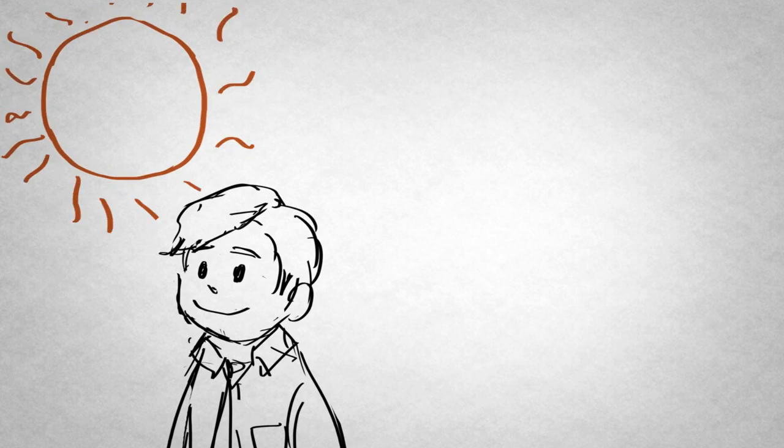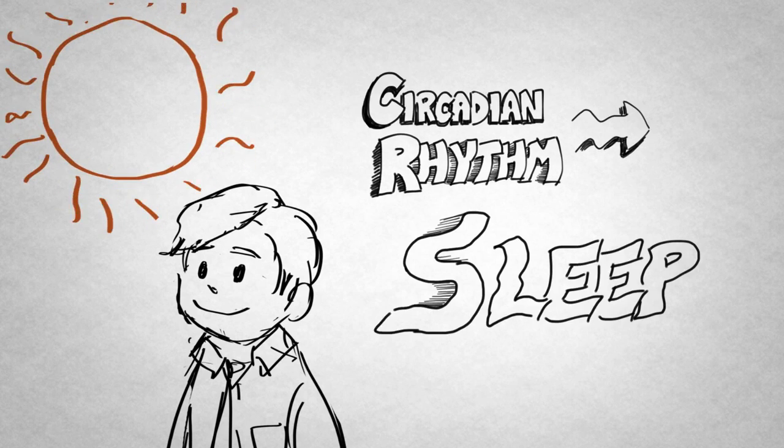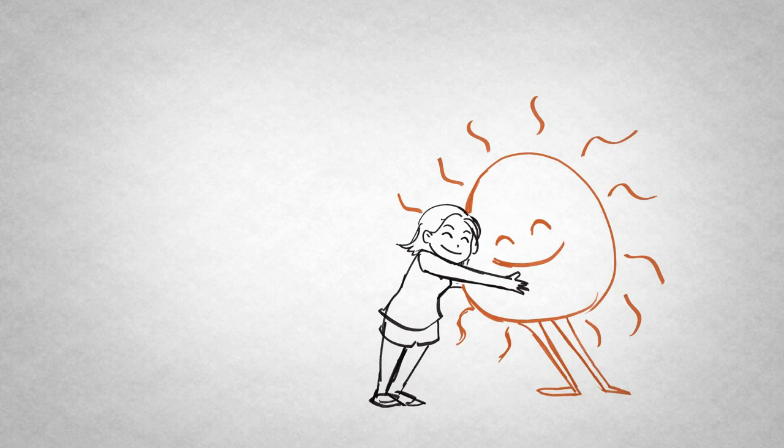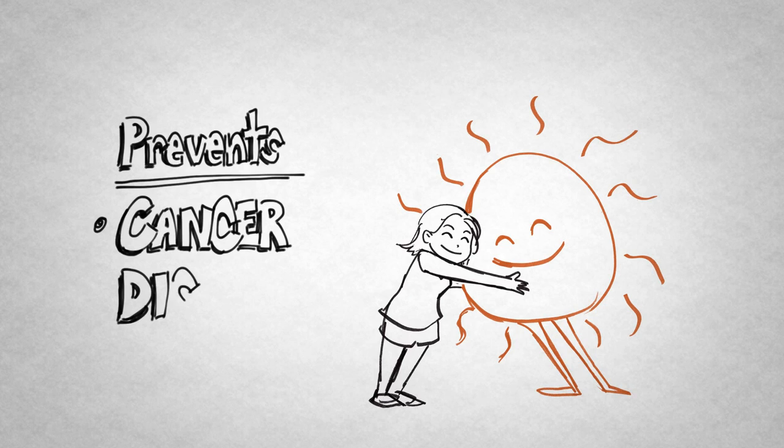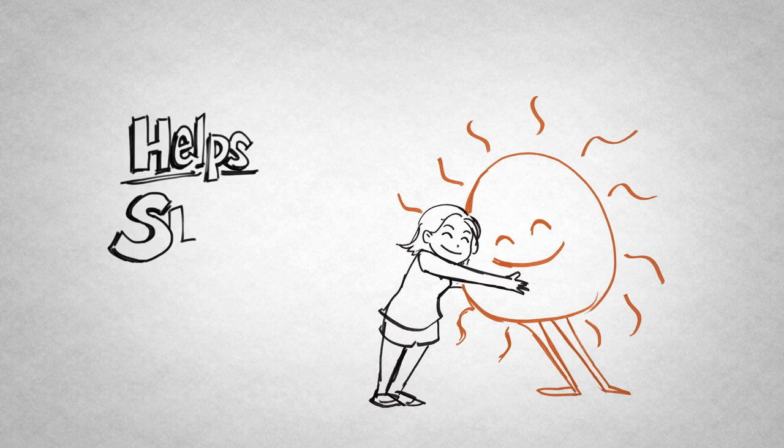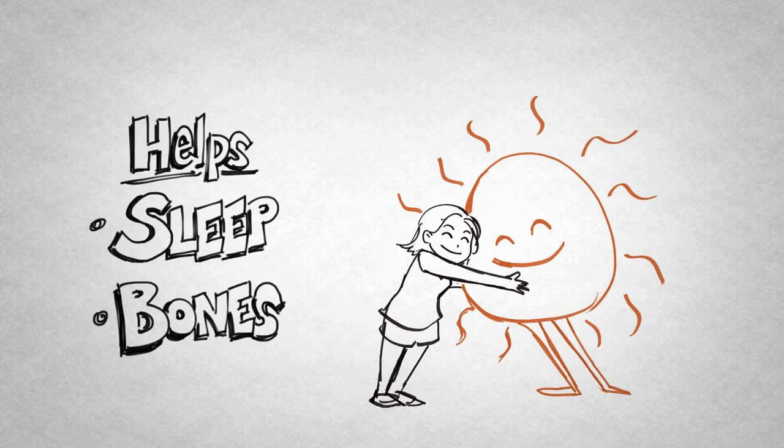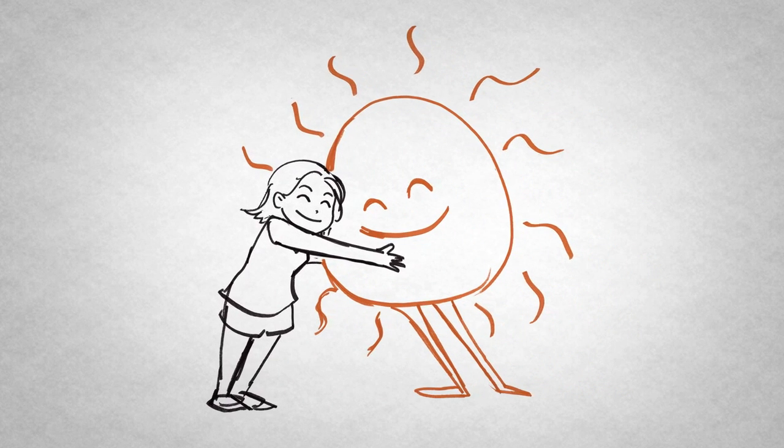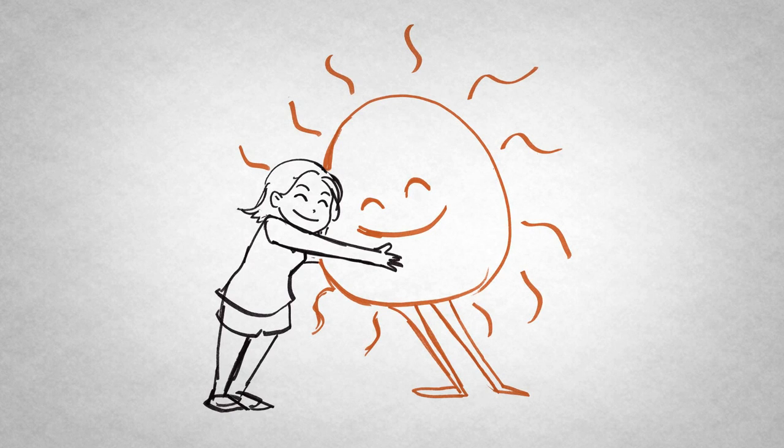Exposure to morning sunlight also helps regulate circadian rhythms, which help promote sleep regularity. So, what did we learn today? Well, we learned that the sun can prevent certain cancers and autoimmune diseases. It can help you sleep better and make your bones strong. The sun is pretty much medicine, but way cheaper than anything your doctor will prescribe. And above all else, the sun can make you happy.